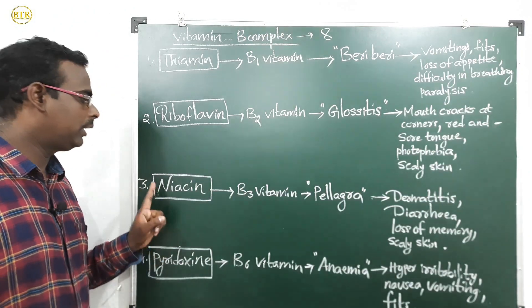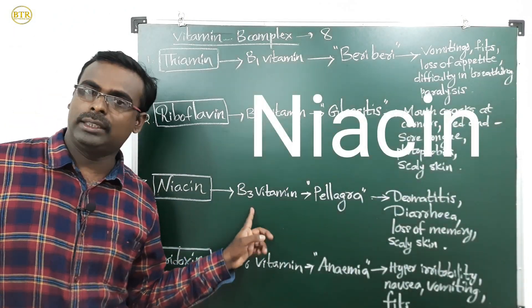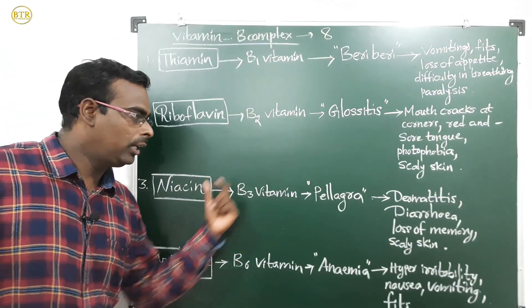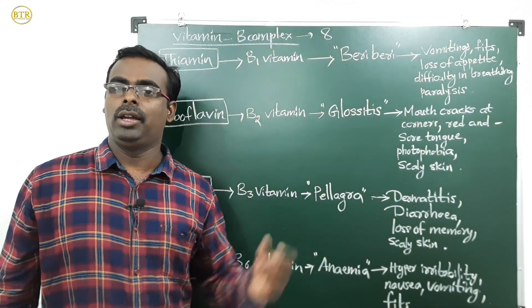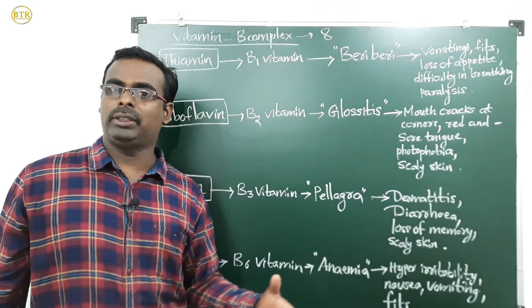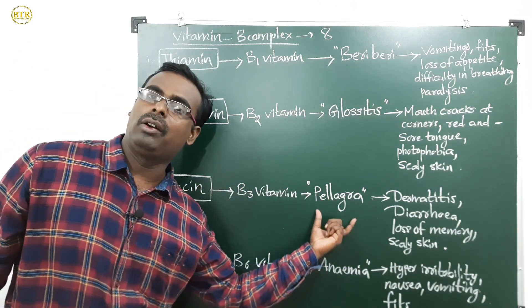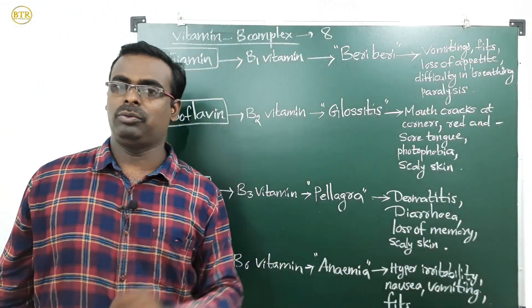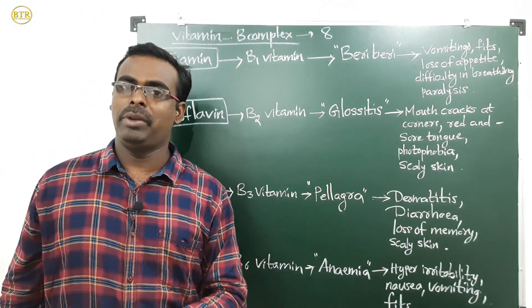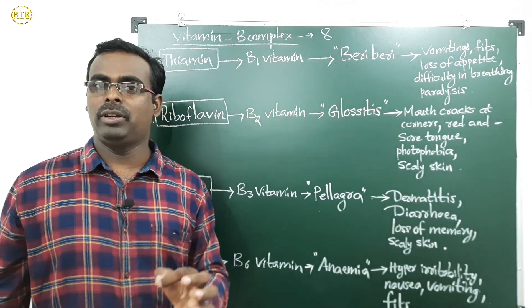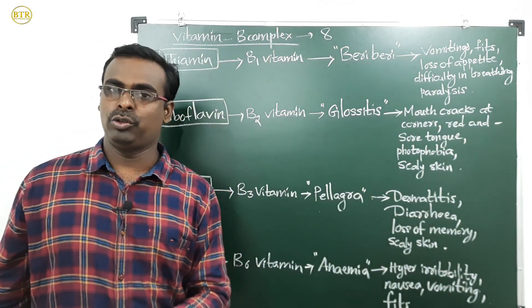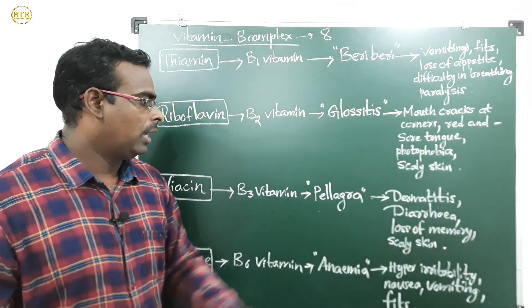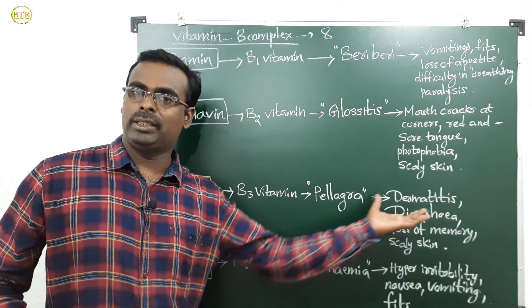The third B complex vitamin is niacin, also called B3 vitamin. Deficiency of niacin causes pellagra disease. Symptoms of pellagra include dermatitis (skin problems), diarrhea (loose motions or liquid stools), loss of memory, and scaly skin.